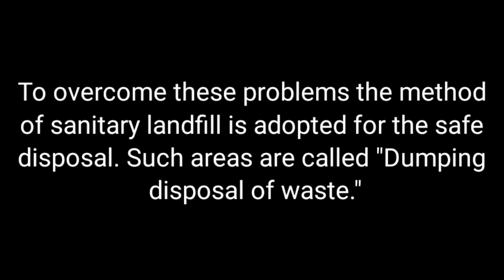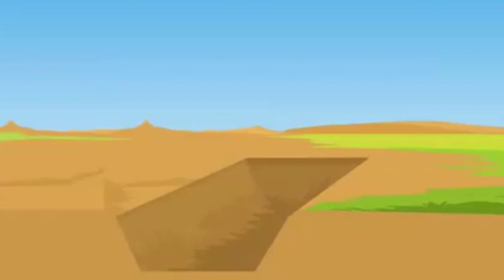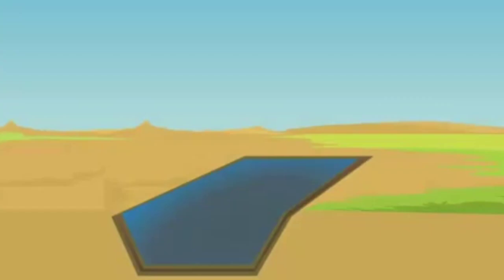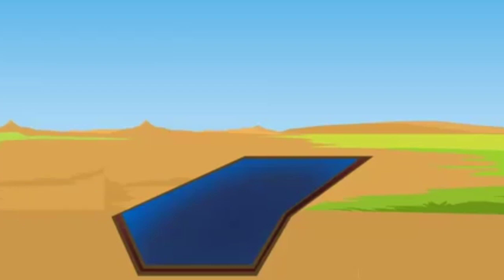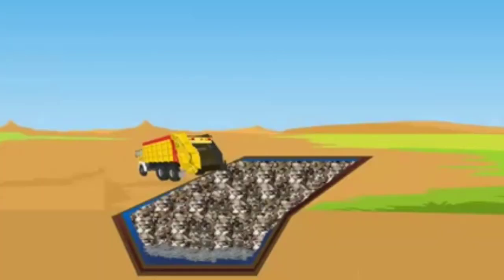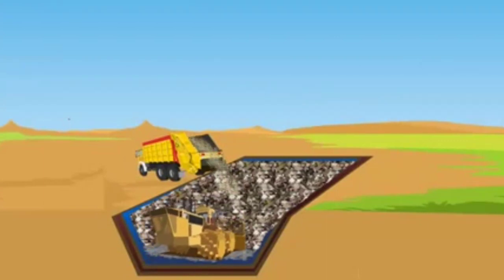To overcome these problems, the method of sanitary landfill is adopted for safe disposal. First, a depression or pit is dug out by removing the topsoil. Then a thin layer of plastic or synthetic liner is placed at the base to prevent leakage — this is also termed the bottom liner. After that, waste is dumped into it.